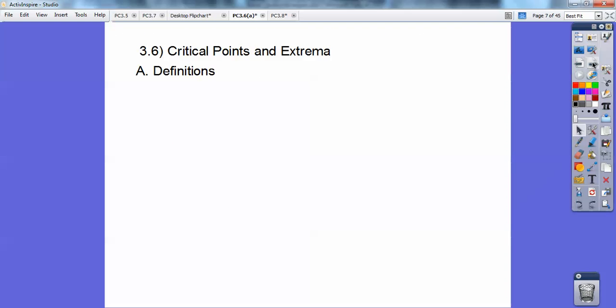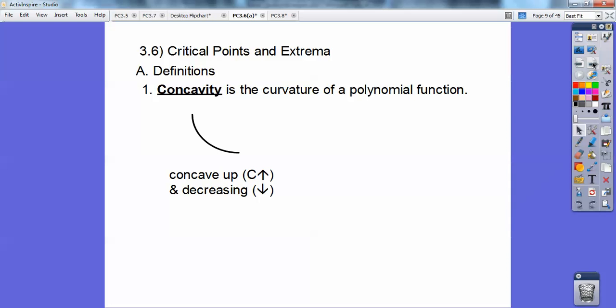So critical points and extrema. Definitions: concavity is the curvature of a polynomial function. Sometimes it curves like this. This would be called concave up. Notice it's decreasing from left to right, so it's concave up but decreasing. Here's a concave up and increasing. Here's a concave down. You see how the curvature is going down? And it's increasing, concave. Here's a concave down, decreasing.